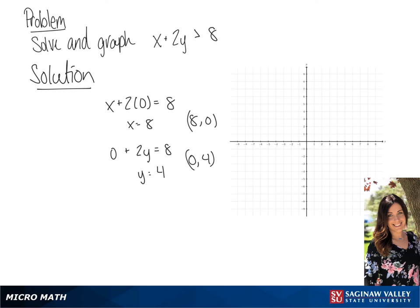So we're going to plot 8, 0, and now 0, 4. And since it's a greater than problem, we're going to draw the dotted line through these two points, and to figure out which part to shade,